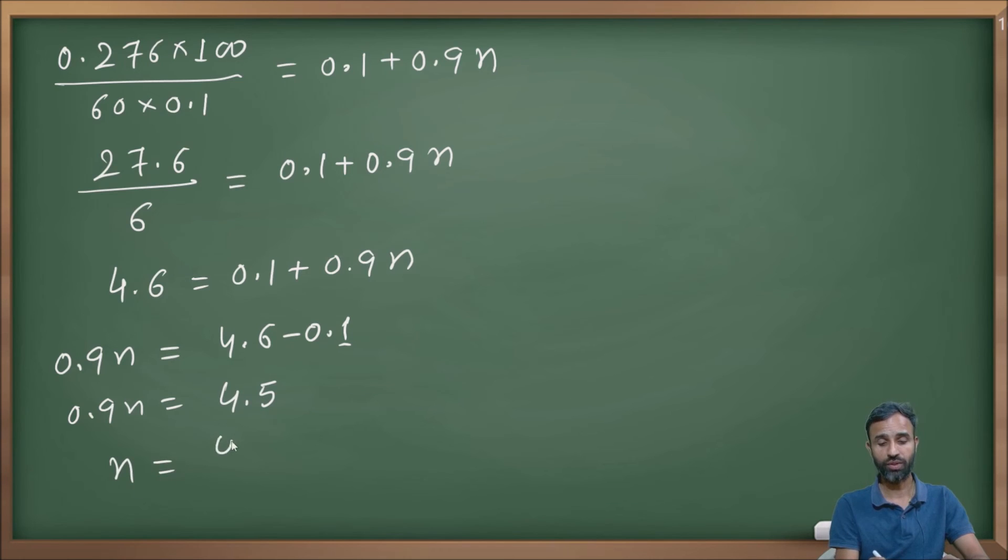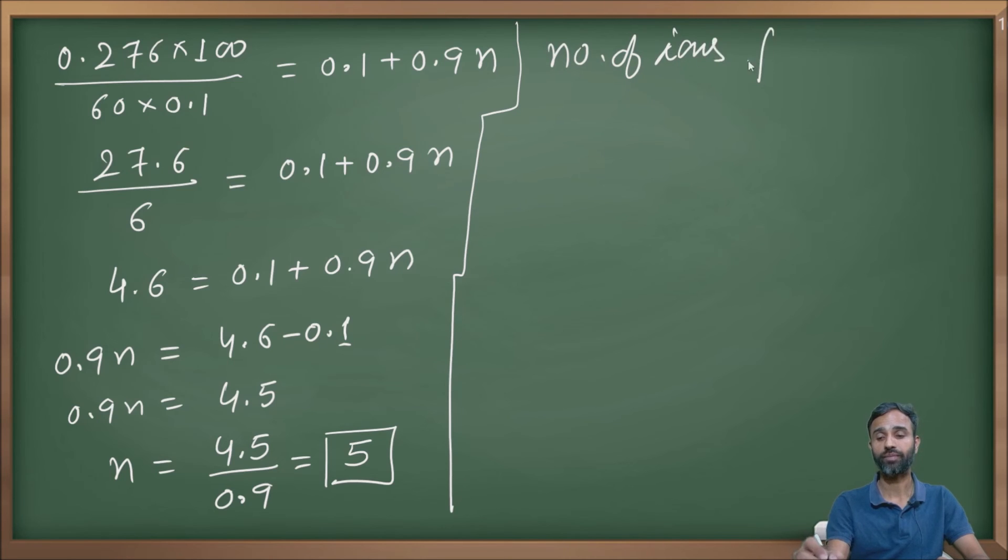Therefore, 0.9n = 4.6 - 0.1 = 4.5, so n = 4.5/0.9 = 5. This means the number of ions furnished by one formula unit of ionic salt is equal to 5. That is the answer.